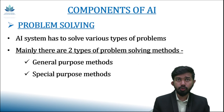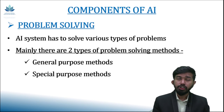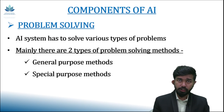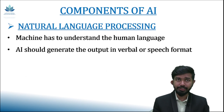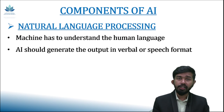Next, we have problem solving. We can have two different types of solving methods: general purpose and special purpose. General purpose methods are applicable to a wider range of problems, while special purpose methods are applicable to only a particular type of problem. The last component is natural language processing. Machines, or agents, should understand human language and provide output in a verbal format. For this, the agent should have the capability of NLP.